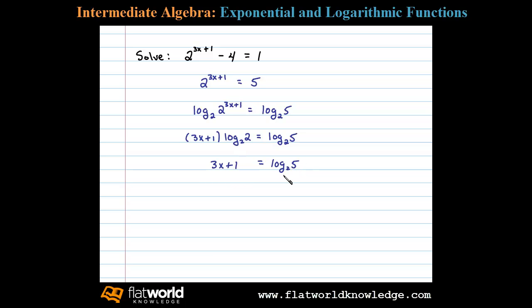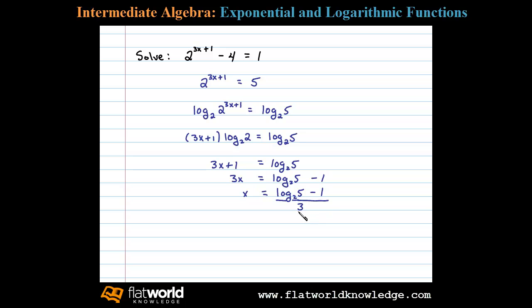Now solving for x, we subtract 1 on both sides. That leaves us with 3x equals log base 2 of 5 minus 1. Then finally dividing both sides by 3, we have log base 2 of 5 minus 1, divided by 3. This is our exact answer.